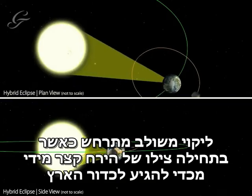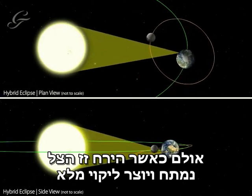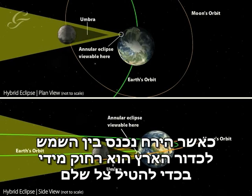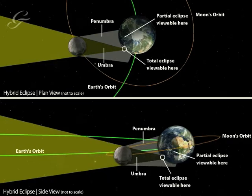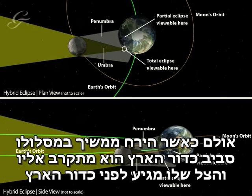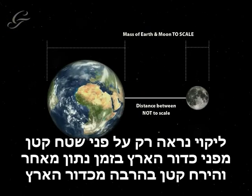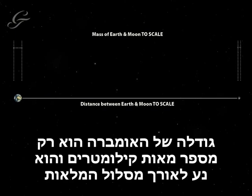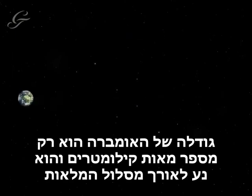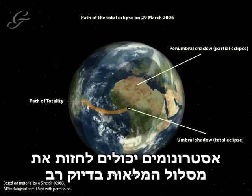A hybrid eclipse occurs when the Moon's shadow is at first too short to reach the Earth, but then, as the Moon moves, the shadow stretches to produce a total eclipse. As the Moon comes between the Earth and Sun for the first time, it is too far away to cast a complete shadow. However, as it continues on its orbit around the Earth, the Moon moves closer to the planet's surface, and its shadow reaches to the ground. An eclipse can only be seen on a small part of the Earth's surface at any one time, because the Moon is much smaller than the Earth. The shadow it casts on the Earth, the umbra, is only a few hundred kilometres across, and moves along what is known as the path of totality. Astronomers can predict this path of totality with great accuracy.